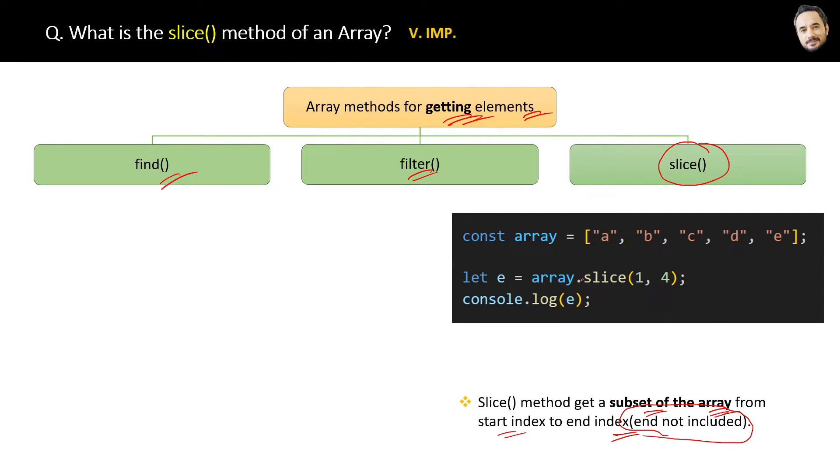So let's see the code. The slice method of an array will accept two parameters: the first is the start index and the second is the end index. Then it will get all the elements from this start index to the end index. But remember again, the element at the end index will not be included.